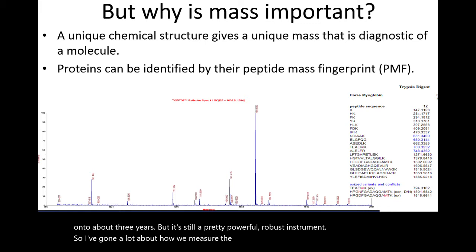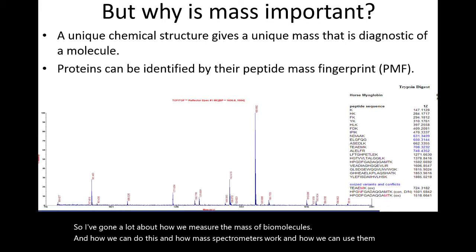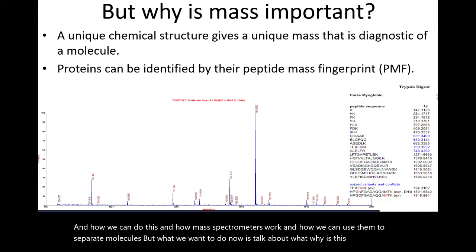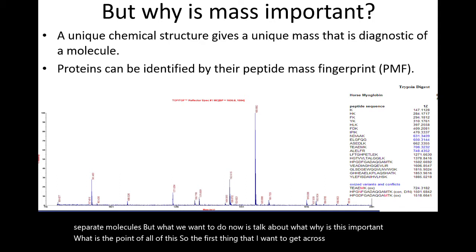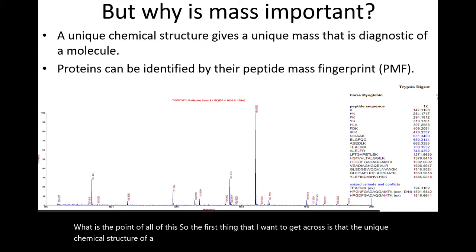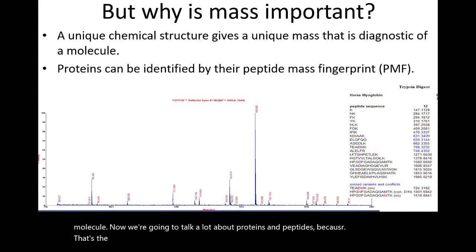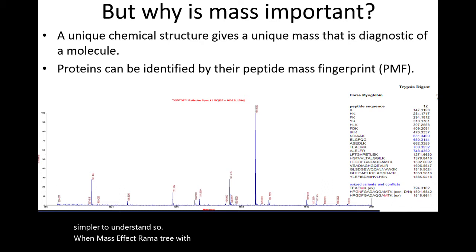I've gone on a lot about how we measure the mass of biomolecules, how mass spectrometers work, and how we can use them to separate molecules. What we want to do now is talk about why this is important — what is the point of all of this. The first thing I want to get across is that the unique chemical structure of a molecule gives it a unique mass that can be diagnostic of that molecule.